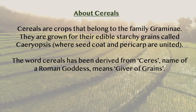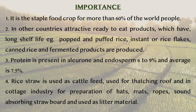Cereals belong to the family Gramineae. They are grown for their edible starchy grain called caryopsis. The word cereals has been derived from 'Ceres', name of a Roman goddess which means giver of grains. Rice is a staple food crop for more than 60% of the world. In other countries it is seen as attractive ready-to-eat products with long shelf life like popped and puffed rice. Protein is present in aleurone and endosperm from 6–9%. Rice straw is used as cattle feed, for thatching roofs, and in cottage industry to prepare hats, mats, ropes, sound-absorbing straw boards and as litter material.